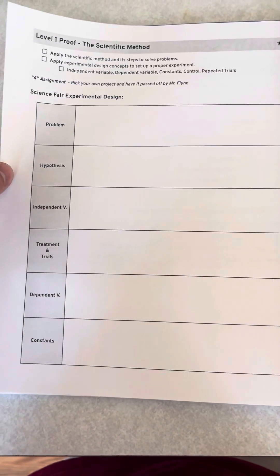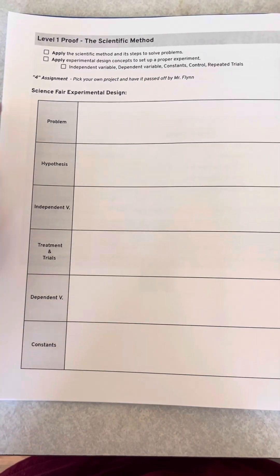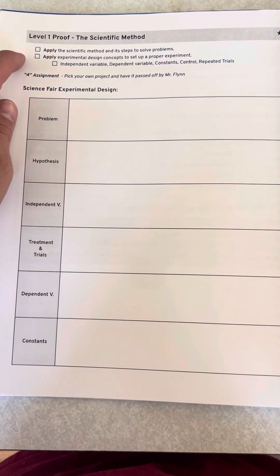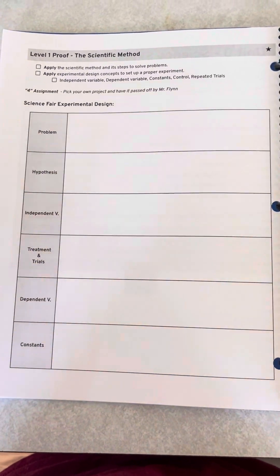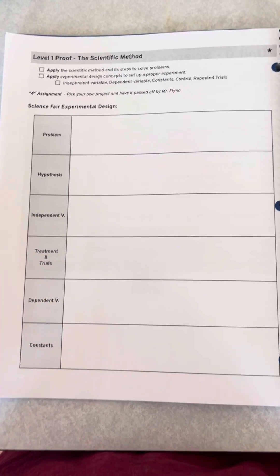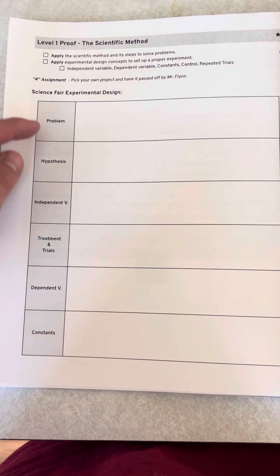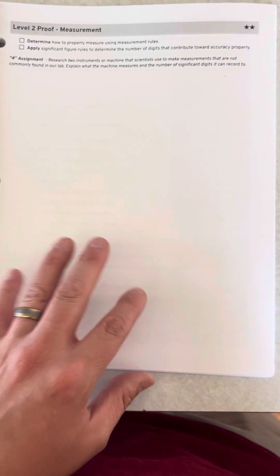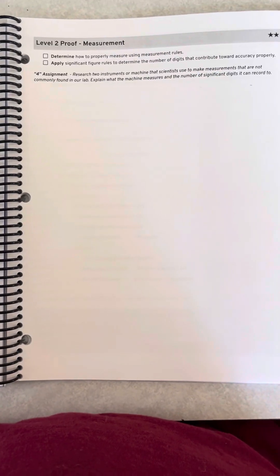So if I go through here, students have to create a science project for the year at the very beginning. And if they pick their own project, they get a four. But here's the main things they have to do. The standards that they have to do, I can apply the scientific method and steps to solve problems. And how they do that is they proved to me by creating their own science experiment. And all the proofs are like this. They're like a blank page and they have to draw out and prove to me that they understand the concepts.